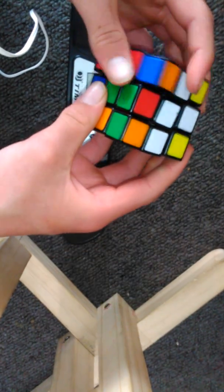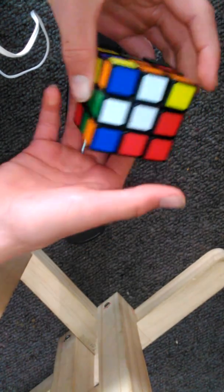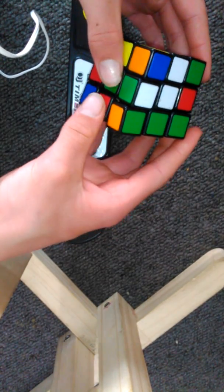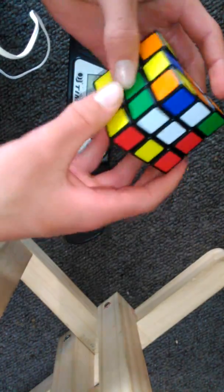Front prime, left prime, right two, down, up two, back, right prime, down prime, right prime, down two. So all you can see is here.